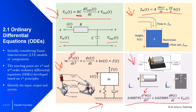For the RC circuit, the input is the voltage in and the output is V-out, and the coefficients are R and C relating to the resistor and capacitor. For the water tank, the input is the flow in and the output is the height of the tank, h(t). The coefficients of that model include A for area, rho for density, g the gravitational constant, and R which is the restriction. For the mass-spring-damper, the input is F(t), the force, and the output is the displacement.